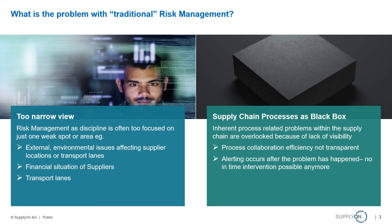These problems are often overlooked, and we have a lack of visibility. For example, we may not see process collaboration not being efficient enough, or we get alerts from our supply chain processes just after the problem has already happened — leaving no time to intervene or take any avoiding measures.